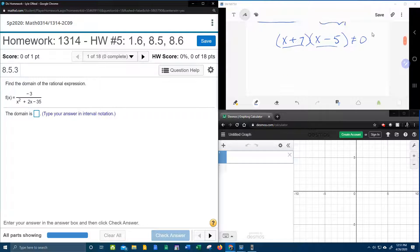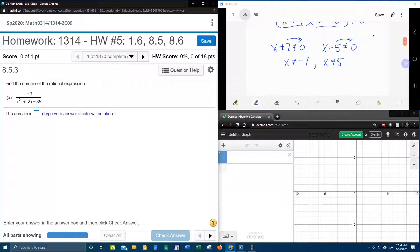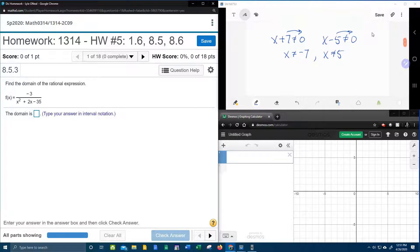So now if I set each one of these factors not equal to 0 and solve for x, then I'll know the numbers that x can't be. So moving the 7 over gives me negative 7. Moving the negative 5 gives me positive 5. And then those are the numbers that x can't be.